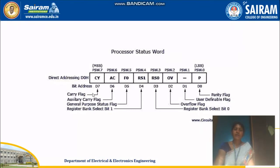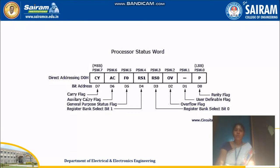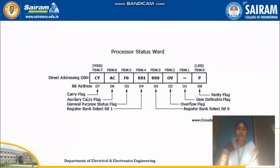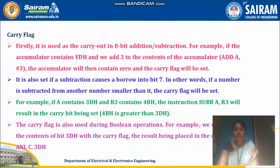Now, the difference between carry flag and auxiliary carry flag: the carry flag is set after the complete addition, where the last overflow bit represents your carry. Auxiliary carry means from the 3rd bit to 4th bit — if there is any carry forwarded, that is called your auxiliary carry flag.